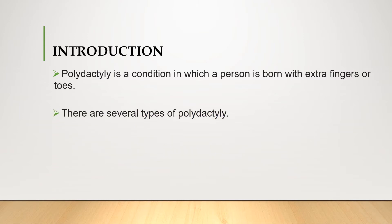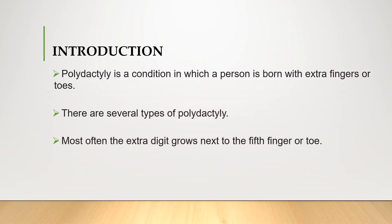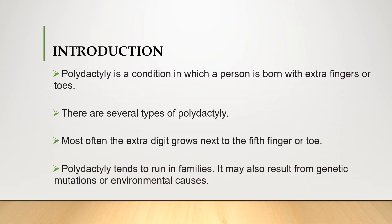There are several types of polydactyly. Most often the extra digit grows next to the fifth finger or toe, and polydactyly tends to run in families. It may also result from genetic mutations or environmental causes.